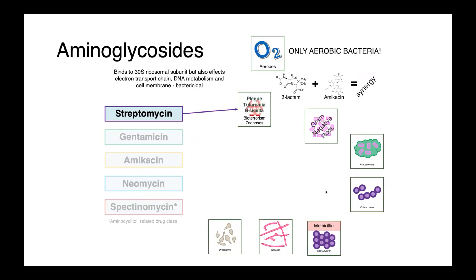The aminoglycosides bind to the 30S ribosomal subunit, but also affect other parts of bacterial physiology, including the electron transport chain, DNA metabolism, and also the gram-negative cell membrane. This multiplicity of effects is responsible for their bactericidal action as compared to other protein synthesis inhibitors, which are generally thought of as bacteriostatic.